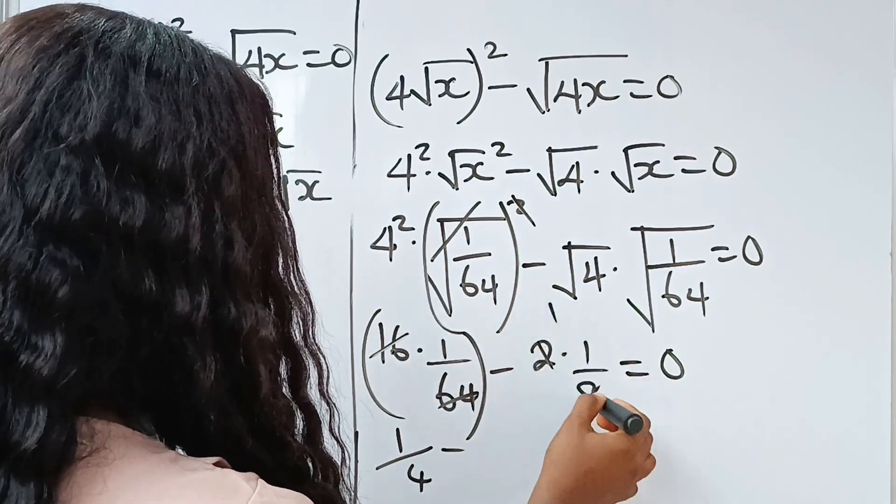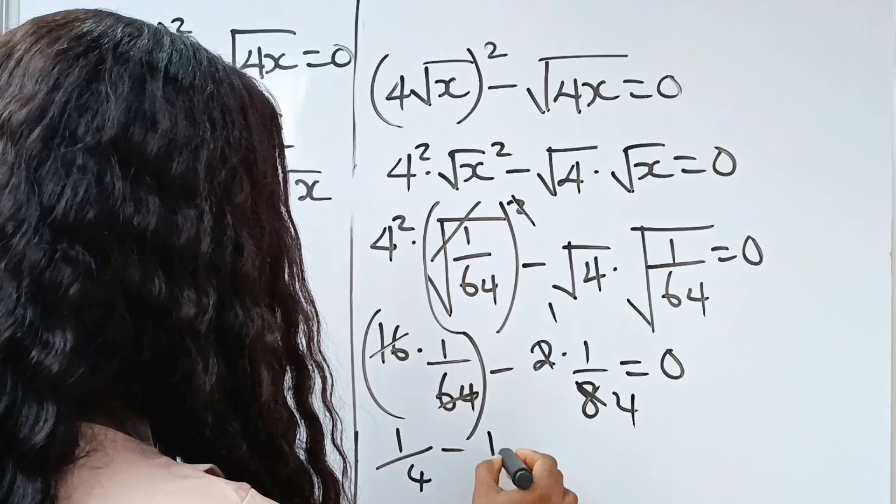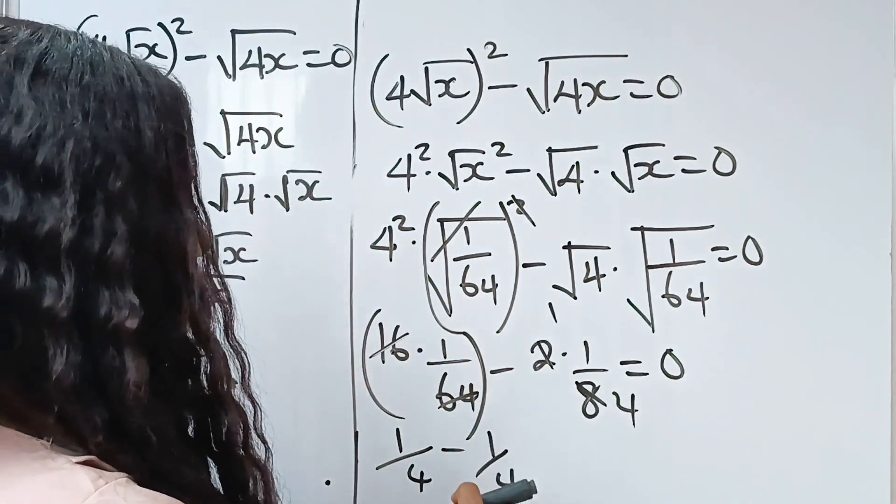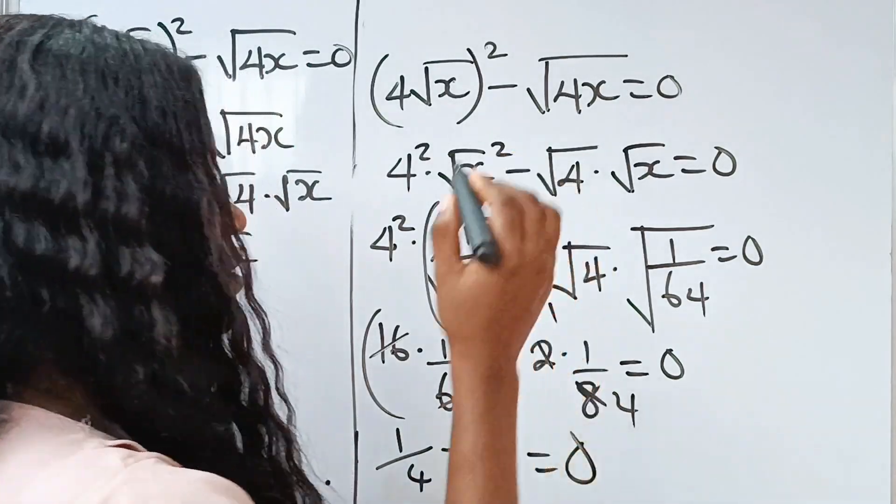So, we have 1 over 4 minus 1 over 4 and this gives us 0.